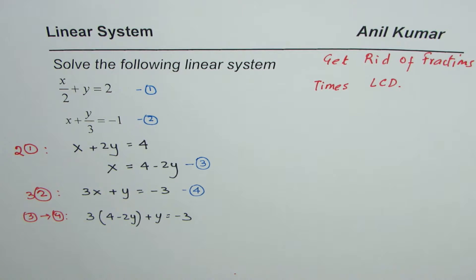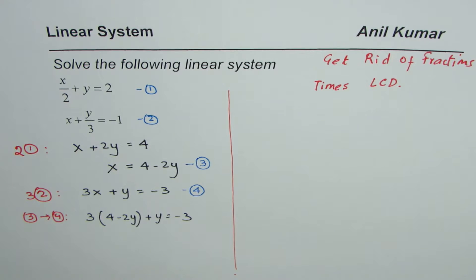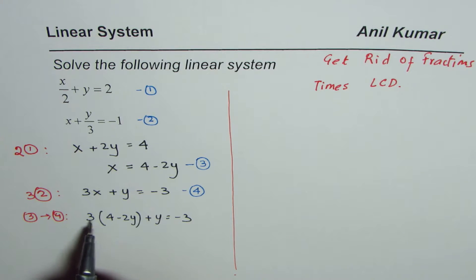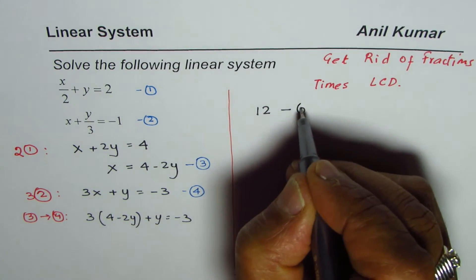Solving this we can get the value of y. So let's solve for y on the right side. Apply the distributive property: three times four is 12 minus three times two, 6, 6y plus y equals minus 3.